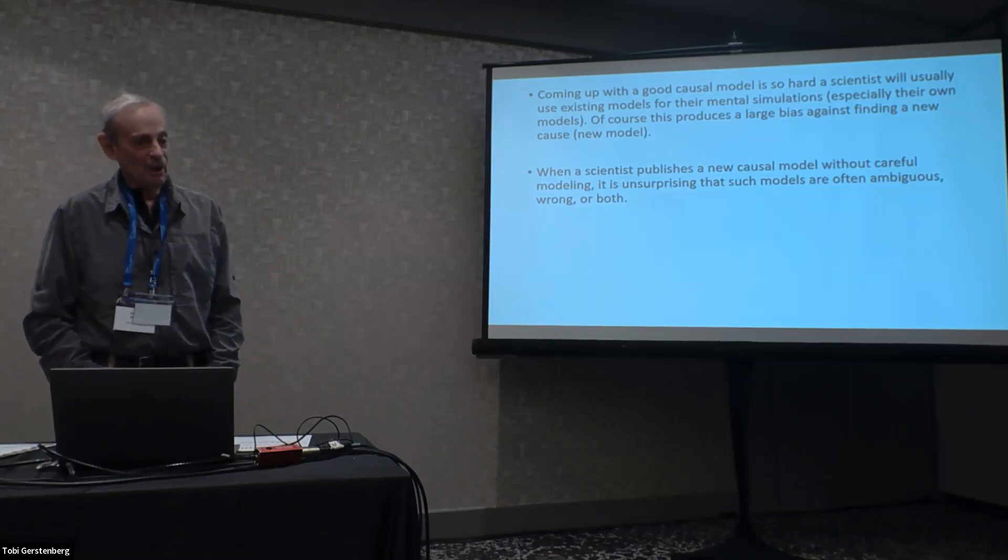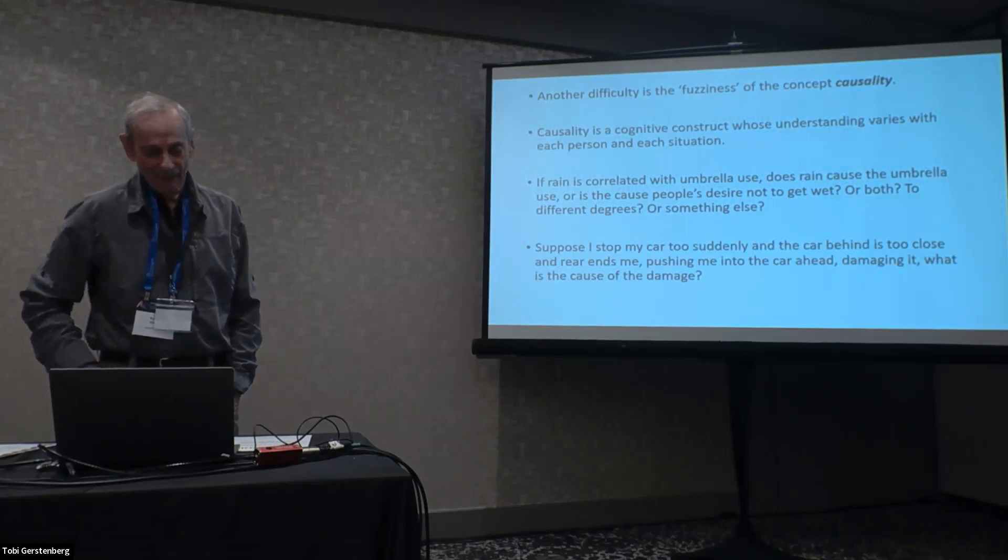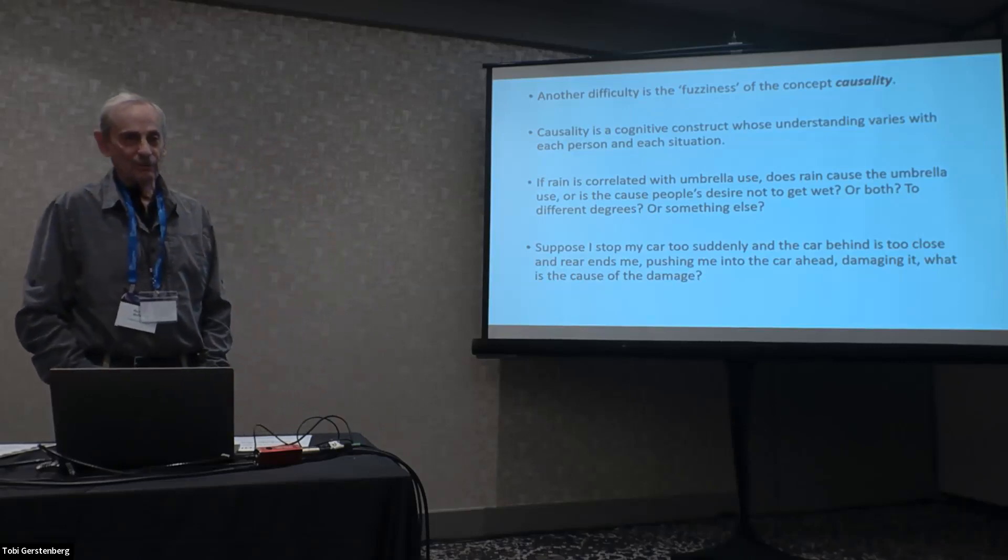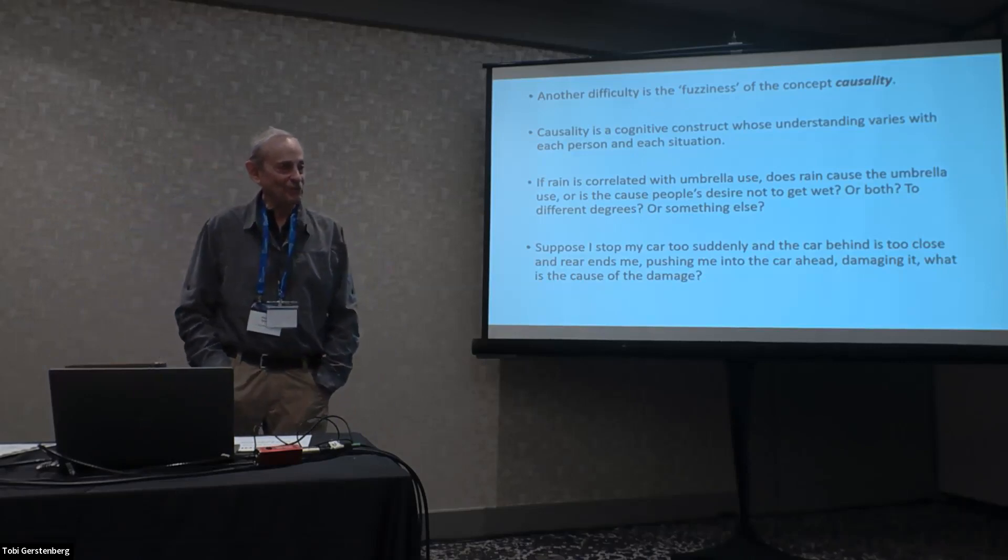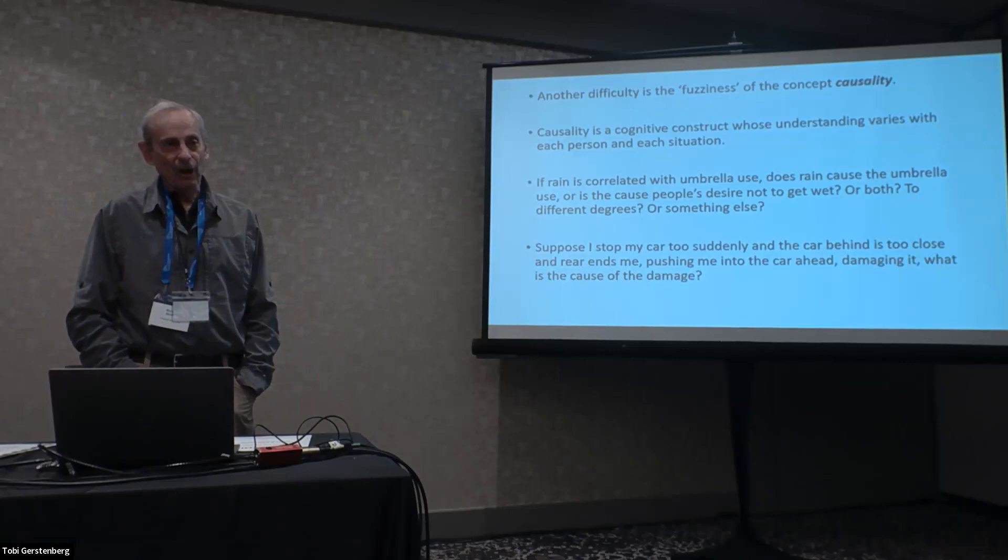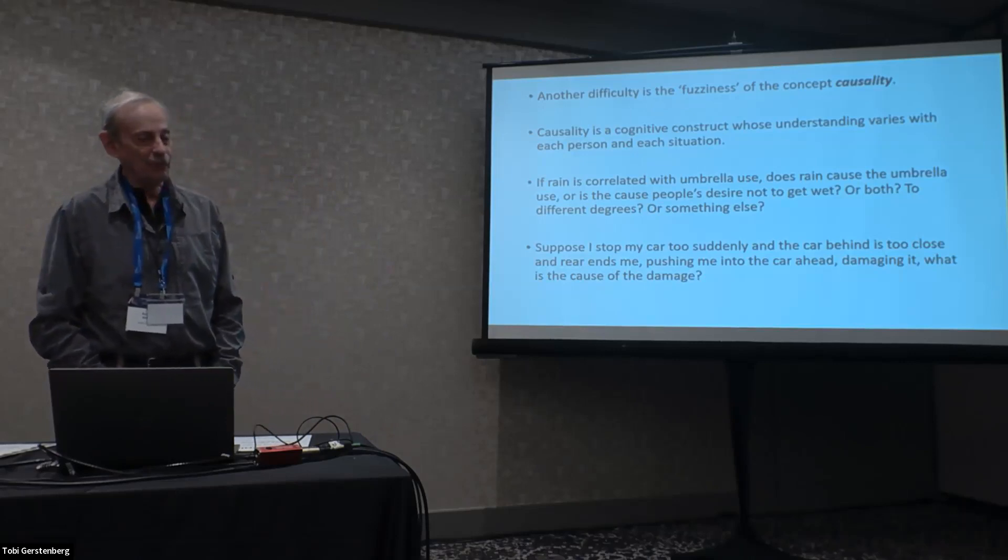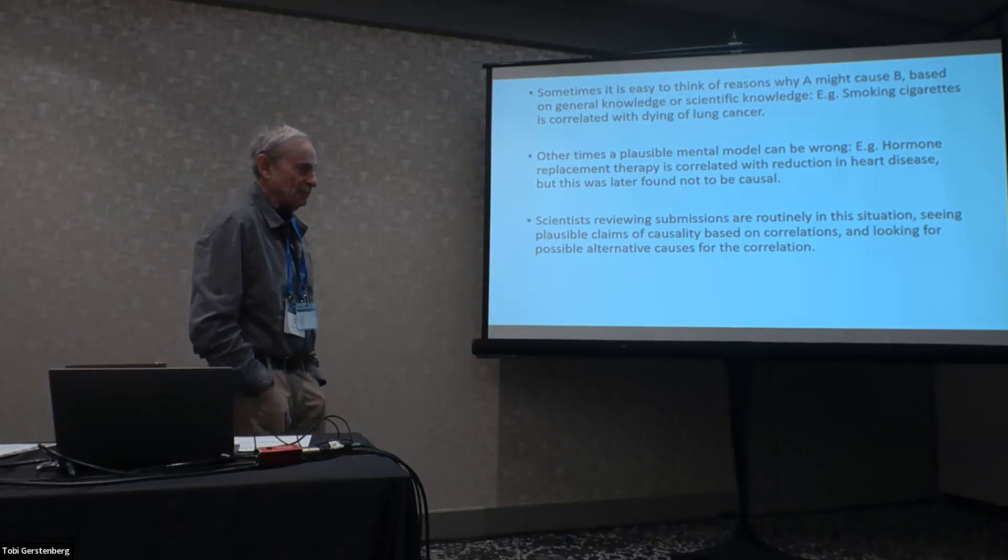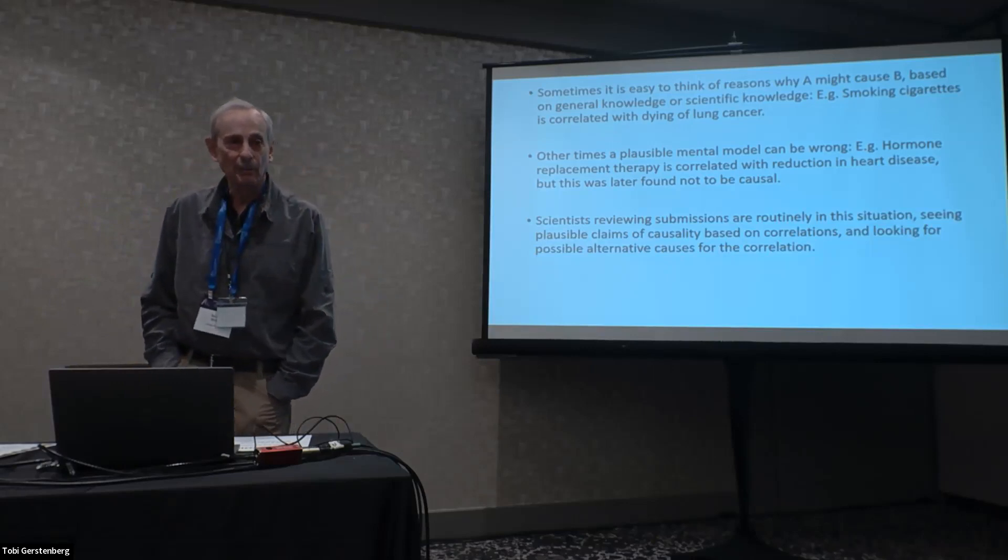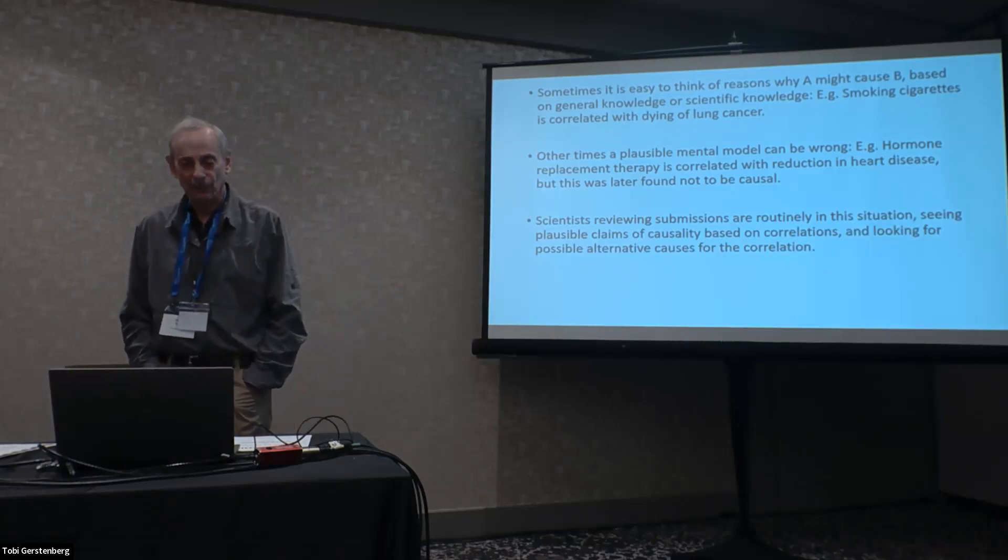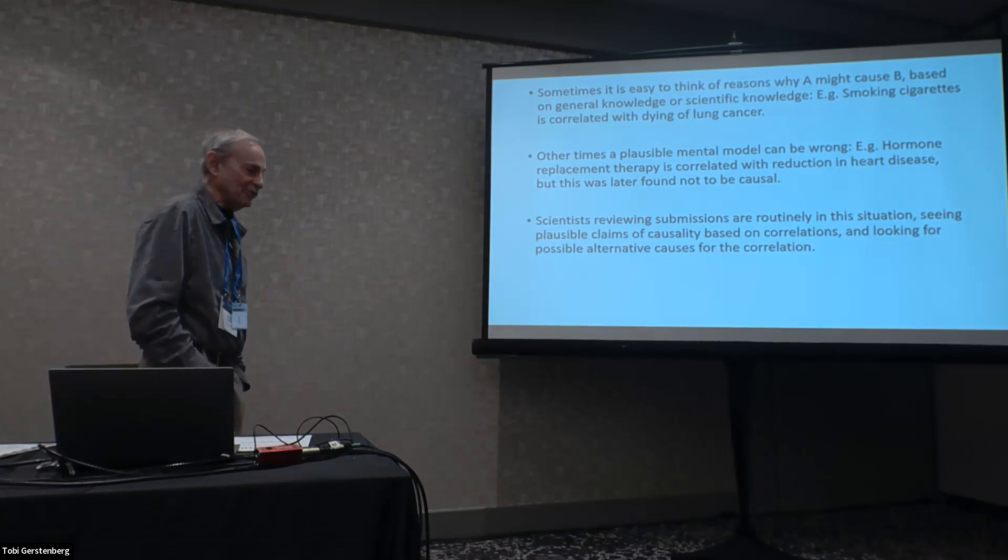When a scientist publishes a new causal model without careful modeling, it's unsurprising that such models are often ambiguous, especially if they're stated verbally, or wrong, or both. We've heard about the fuzziness of the concept of causality. We heard in our first talk by Lauren the multiple different aspects of causality that we should be taking into account. It's a cognitive construct, not a normative one. It's something we all as humans think we understand to some degree, usually with different ideas of what it means.